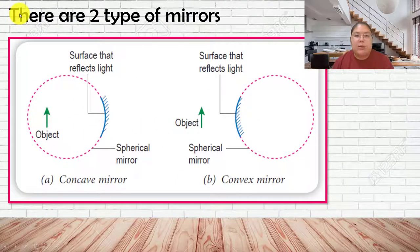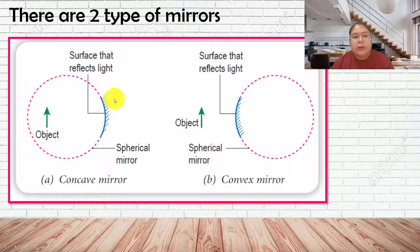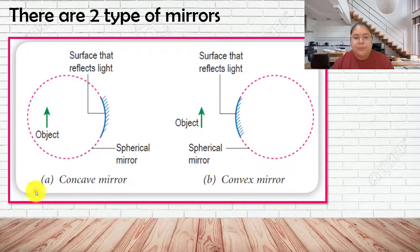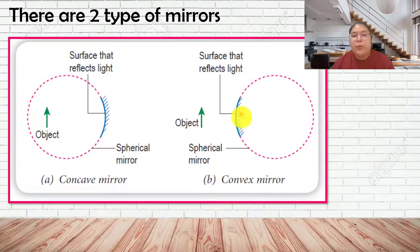First, we need to introduce two types of mirrors - not the plane mirror, because we already learned that. The first curved mirror is the concave mirror. You can see the shape of its surface that reflects light. The second one also reflects light but the shape is reversed - we call it the convex mirror.